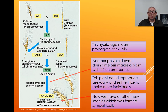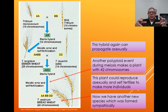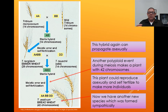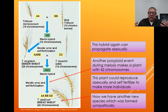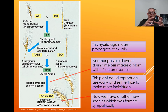Now you've got this sterile hybrid with 21 chromosomes doubled to 42 chromosomes — back to an even number. This new plant can reproduce asexually and can self-fertilize, but it can't reproduce with any other species. That's a new species: Triticum aestivum, or modern wheat, with 42 chromosomes. It didn't have to be physically isolated — it just happened due to meiotic error. That's sympatric speciation.